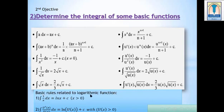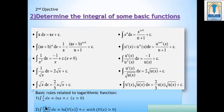Basic rules related to the logarithmic function: Since the derivative of ln x equals 1 over x, the integral of 1 over x dx equals ln x plus c, for x positive. Integral of u prime(x) over u(x) dx equals ln of u(x) plus c, with u(x) positive, where u prime is the derivative of u.